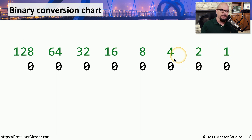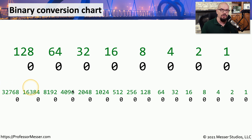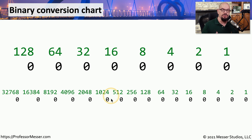I've put in eight different slots for this binary conversion chart, but depending on how many bits you need in your conversion, you can keep extending it out by simply doubling the number. You may find yourself using these longer charts when you do additional IP subnetting, but the majority of what you're working with will be eight single bits made up into a byte.